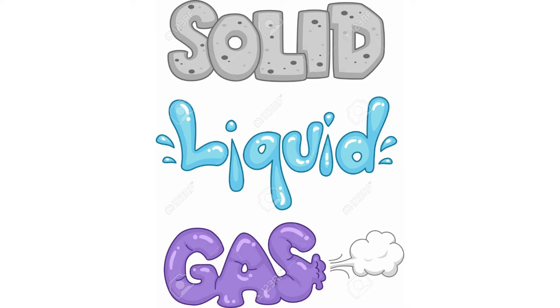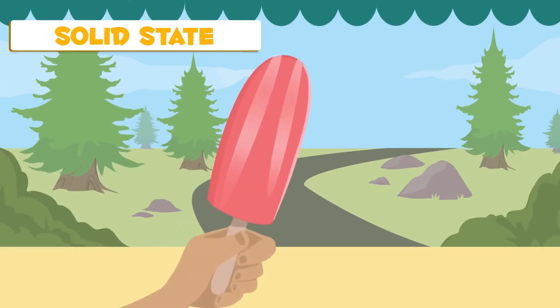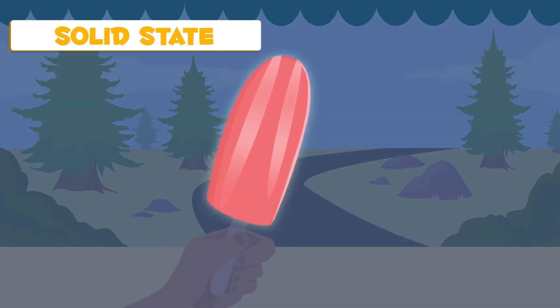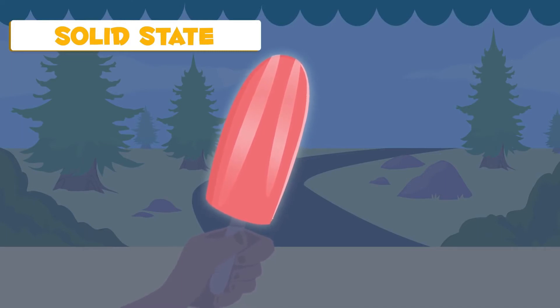Matter looks and acts differently in each of its forms. Matter in its solid form has a definite shape. It also takes up a certain amount of space. Under a microscope, you can see the particles.